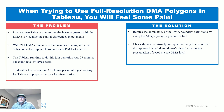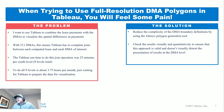Specifically, what is the problem? I want to combine the lease payments with the DMAs in Tableau. With 211 DMAs, Tableau has to create a join between each computed lease and its associated polygon. That took 25 minutes for one credit level, and I have nine credit levels — about 1.3 million records in one credit level, over 30 million in all nine. That's almost approaching four hours just to wait for Tableau to prepare the data for visualization.